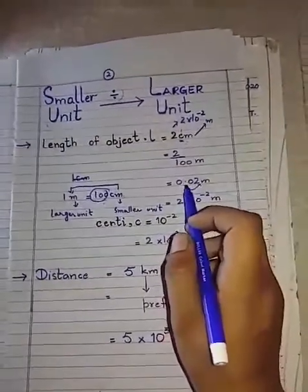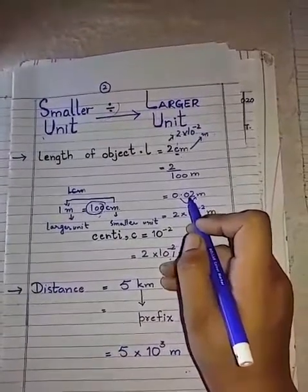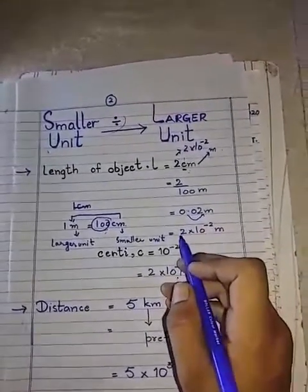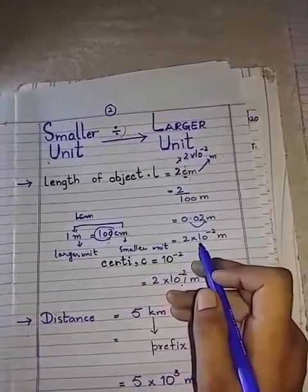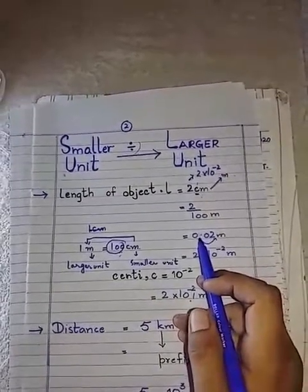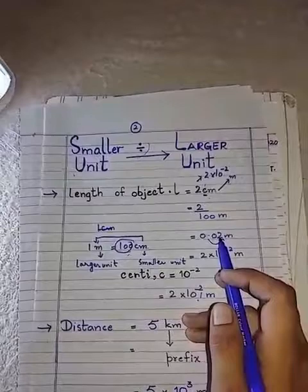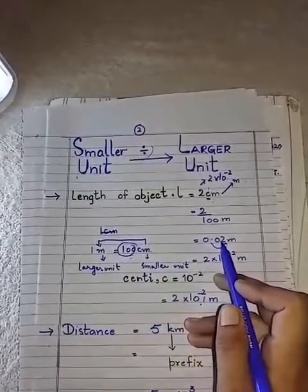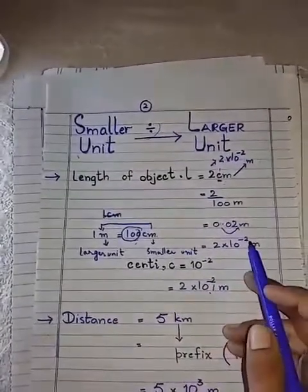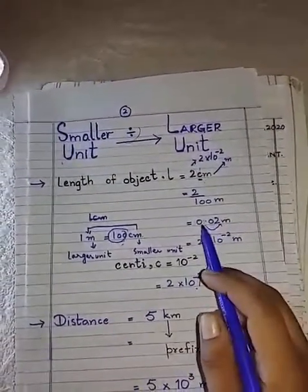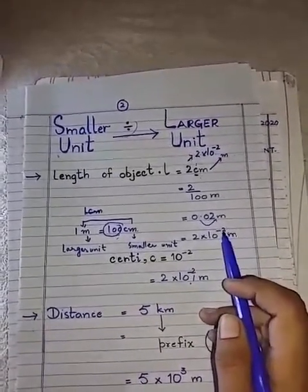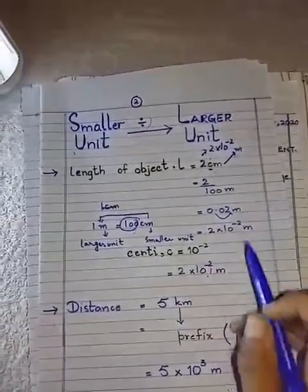Now if we want to express 0.02 meters in scientific notation, the same rules apply: the decimal is placed after the first non-zero digit. Here, 2 is the first non-zero digit, so the scientific notation is 2 × 10 raised to some power. The power of ten depends on the number of digits between the initial and new position of the decimal. There are two digits between those positions, so the power is 2. Since the decimal moves to the right, the power of ten is negative: 2 × 10⁻².